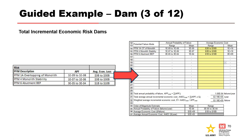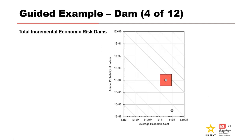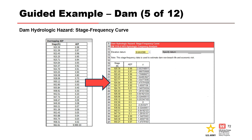Next, complete the total incremental economic risk for dams worksheet by selecting the appropriate average economic cost for each potential failure mode. A matrix is generated showing the geometric mean of the PFMs and order-of-magnitude total incremental economic risk. The Module 7 guided exercise dam data provides 89 rows of stage frequency data. Copy and paste that data as values into the dam hydrologic hazard stage frequency curve worksheet. Note that data must be ordered from low to high stage. Since the worksheet allows 95 points and only 89 were provided, the remaining rows are left blank.